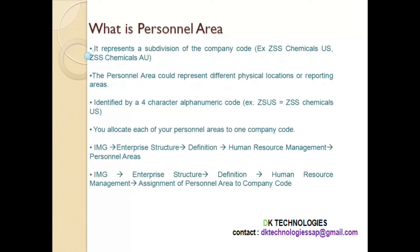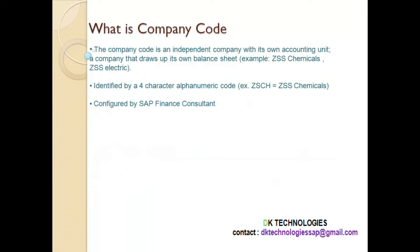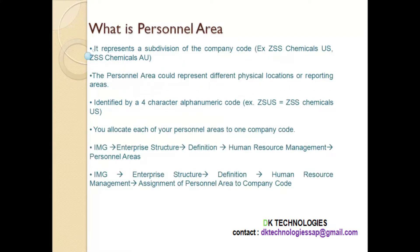What is personal area? Personal area is a subdivision of the company code. For example, company code is like ZSS Chemicals, and ZSS Electric is a separate company code. Personal area is a subdivision of the company code — like ZSS Chemicals US or ZSS Chemicals Australia. These are two personal areas under the company code ZSS Chemicals. The personal area could represent different physical locations or reporting areas, depending on the company.